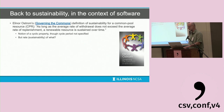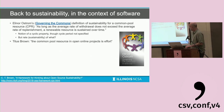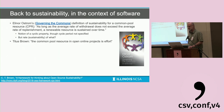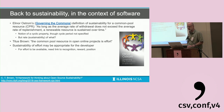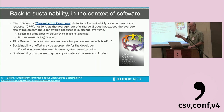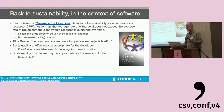Titus Brown suggested in a blog post that the common pool resource in open online projects is effort, and that sustainability of effort is what we should be thinking about — which is most appropriate for the developer. For that effort to continue flowing into the system, there needs to be a link to recognition, reward, and position. Sustainability of the software itself may be more appropriate for users and funders, who don't care about the effort — they want to know if the software is being sustained.